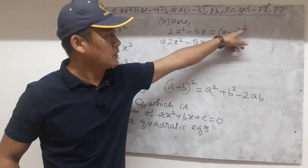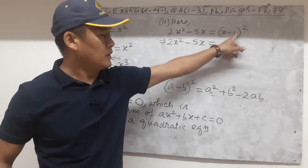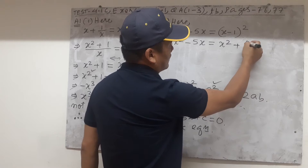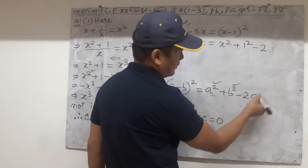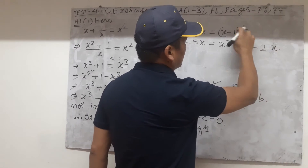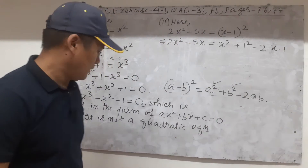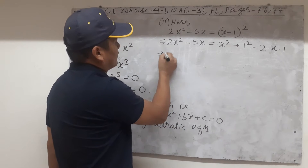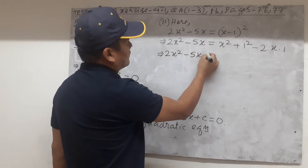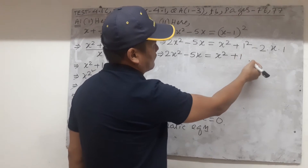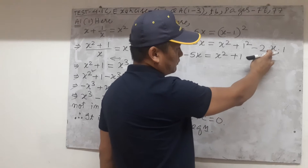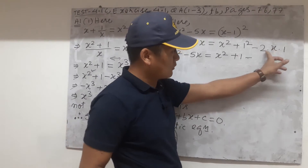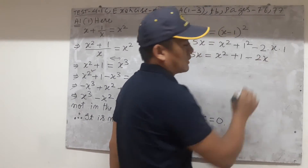We know this formula from class 7 and 8: (a minus b) whole squared is a squared plus b squared minus 2ab. Let us apply this formula — it is exactly in the same format. Here a is x and b is 1, so a squared gives x squared, b squared gives 1 squared, and minus 2ab gives minus 2 times x times 1.